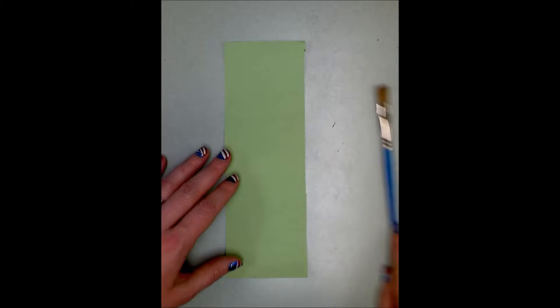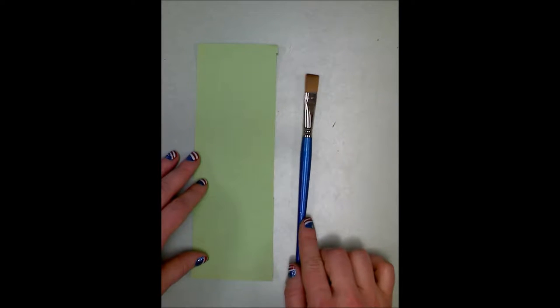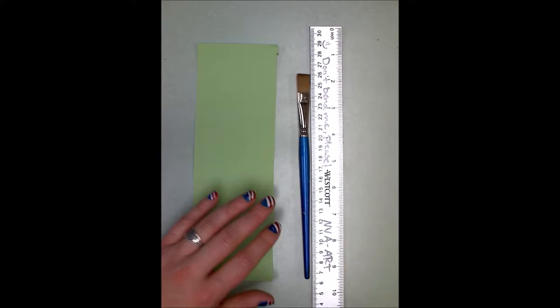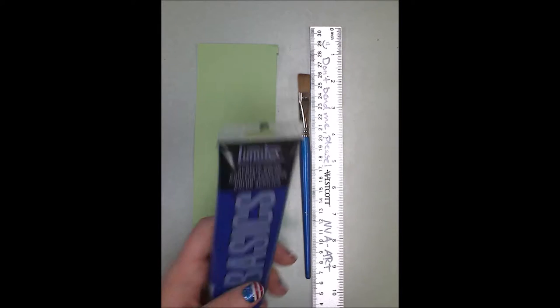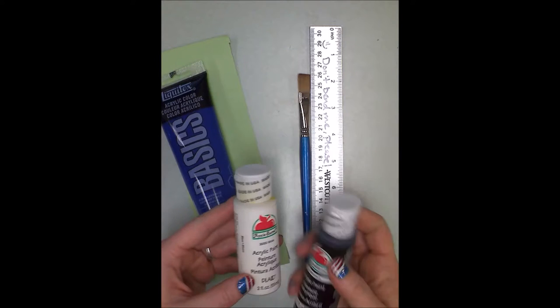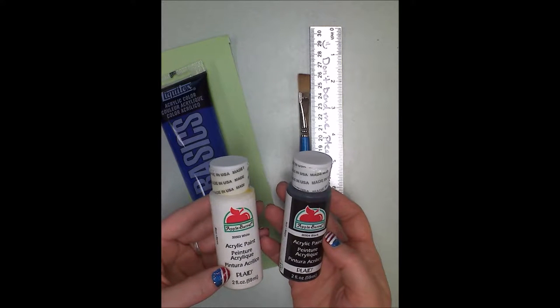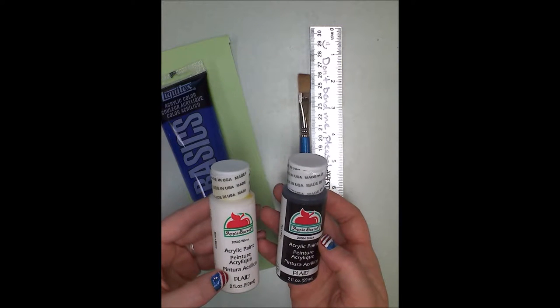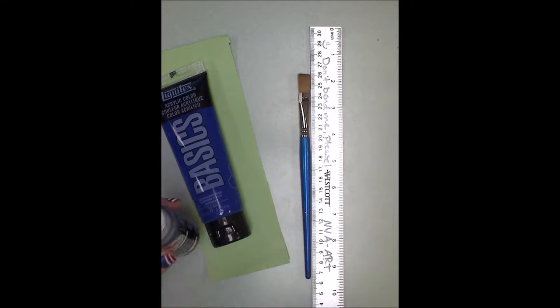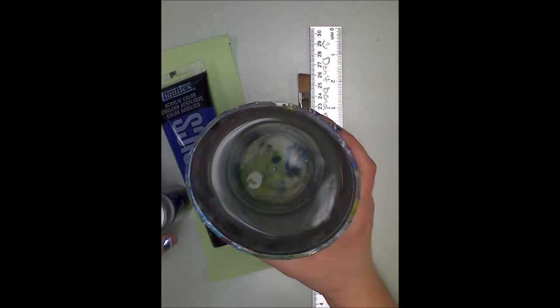You're going to need a paintbrush. I'm using a flat brush and a ruler. Some paint. You're going to need a color white and black. I'm using acrylics today but you could use temperas or watercolors. That will be a different video. And then I've got a water dish and a paper towel.